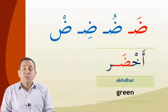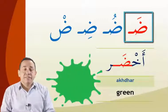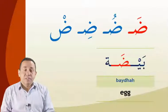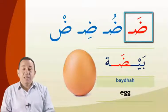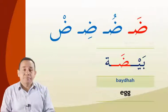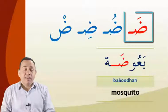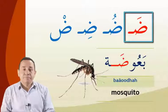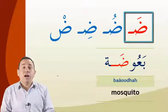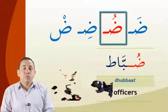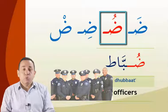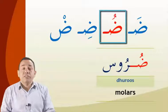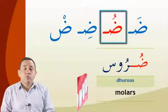ضَ — ضبع (dab'). أخضر (akhdar) — أخضر. ضَ — بيضة (bayda) — بيضة. ضَ — بعوضة (ba'ooda). ضُ — ضباط (dibbaat). ضُ — ضروس (duroos).